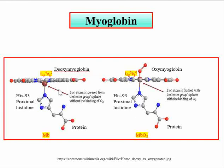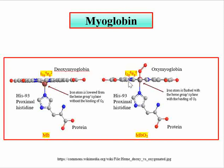We can differentiate between the deoxyform and oxyform visually. This is one unit of oxyhemoglobin or the oxyform of myoglobin, and this is one unit of deoxyhemoglobin or deoxymyoglobin. Here you can see the iron center is below the porphyrin plane, attached to the histidine residue of the protein on one side, with no oxygen in this form. In the oxyform, the iron center is present in the plane of the porphyrin ring and oxygen is attached to the iron center.